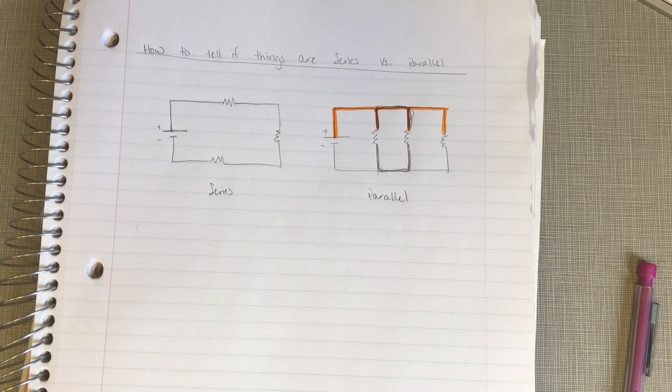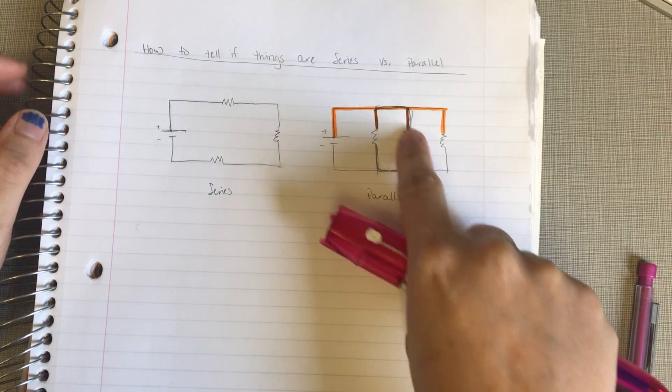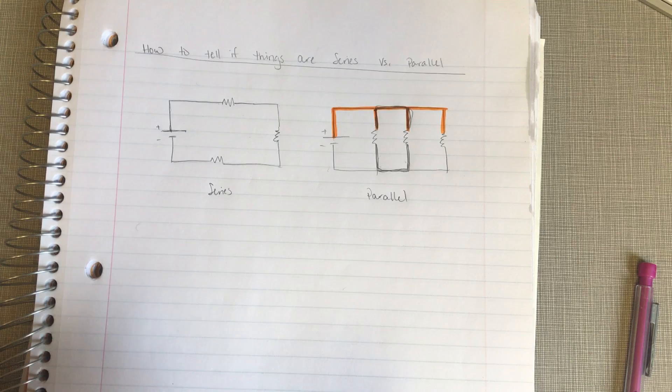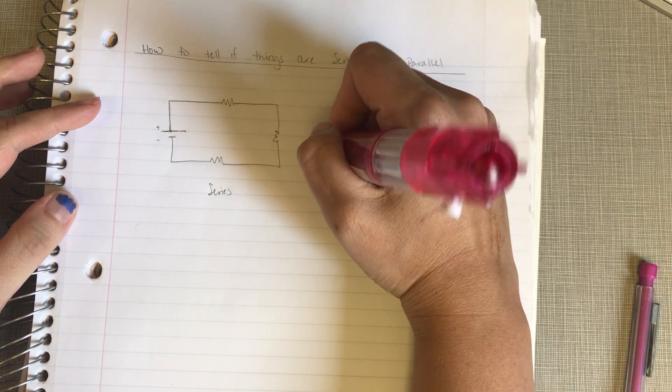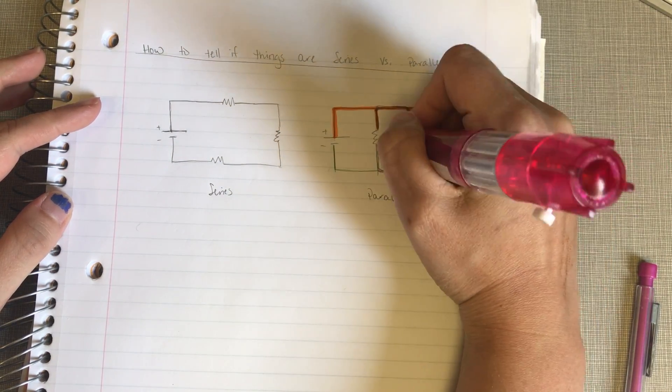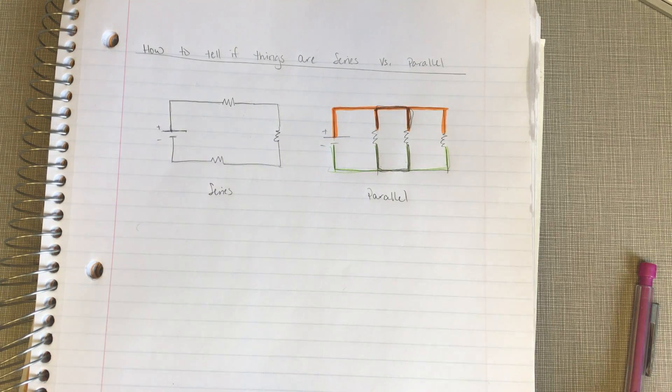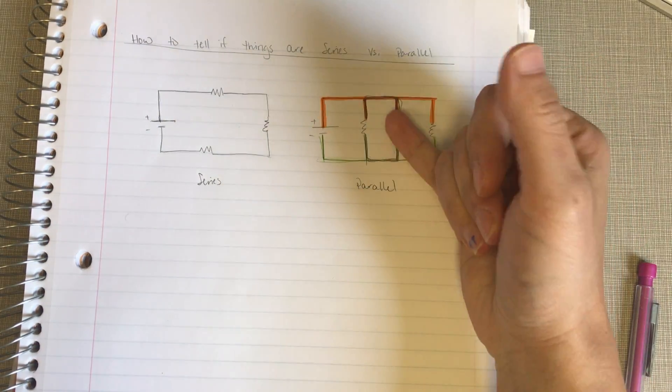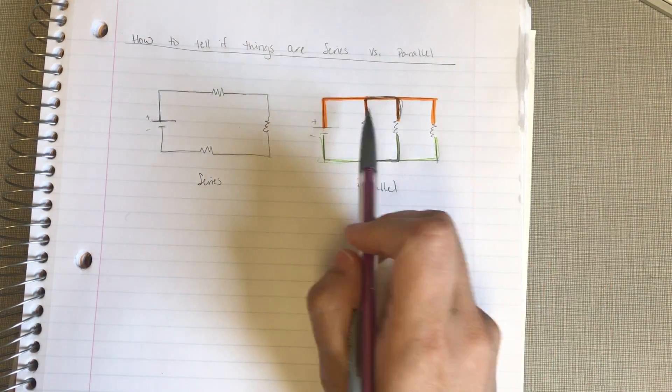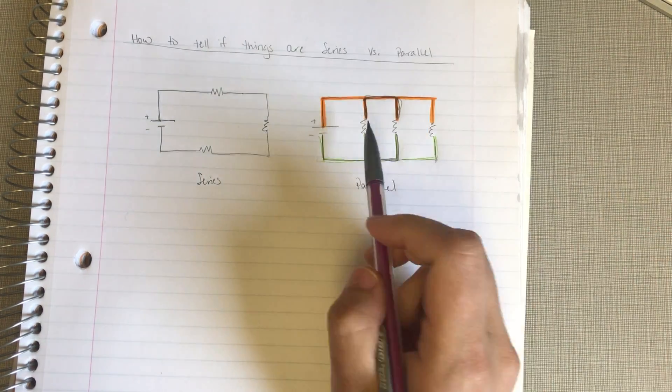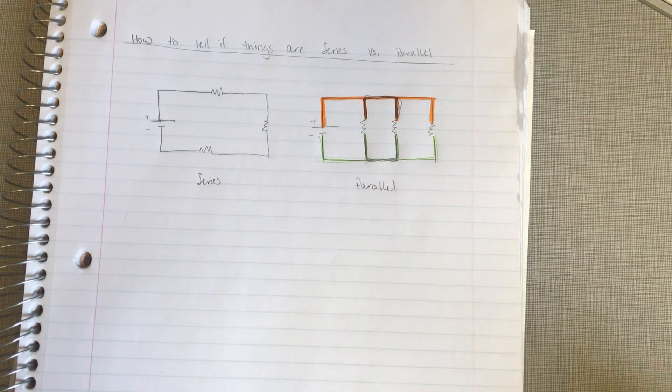So, things are in parallel if they have the same potential, the same voltage, on both sides. There you are. So, this entire wire is at the same potential. And then down here, this entire wire is also at the same potential. So, if you're a visual person like I am, two things are in parallel if they share the same colors. So, all of these guys have orange on one side and green on the other. So, all of these things are in parallel with each other.